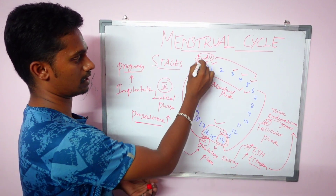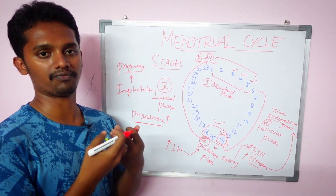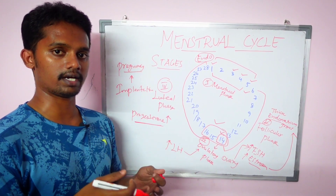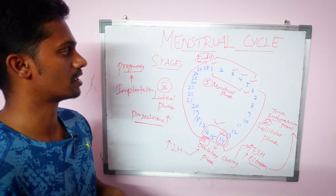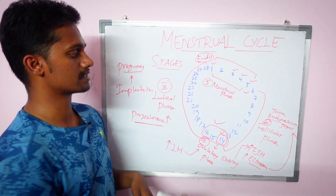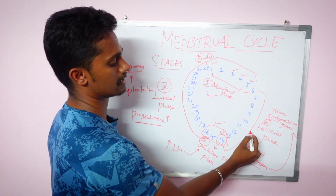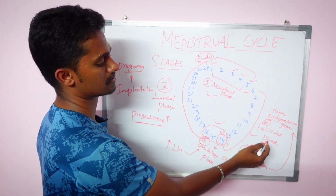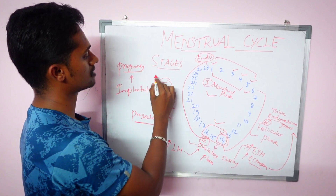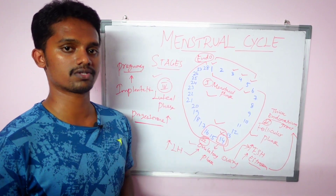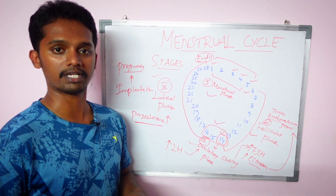In summary, there are four stages of the menstrual cycle. First stage: the menstrual phase. Second stage: the follicular phase. Third phase: the ovulatory phase. Fourth phase: the luteal phase. These are the four phases known as the stages of the menstrual cycle.